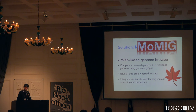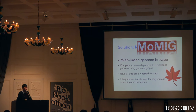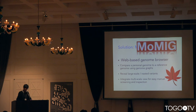To address this problem, I introduce Momiji — Modular Multiscale Integrated Genome Graph Browser. Momiji is named after the Japanese name for Maple. There are three key features: First, Momiji enables comparison between a personal genome and a reference genome using genome graph visualization. Second, Momiji can reveal large-scale or nested variants easily. Last, Momiji integrates a multiscale view for easy manual screening and inspection.